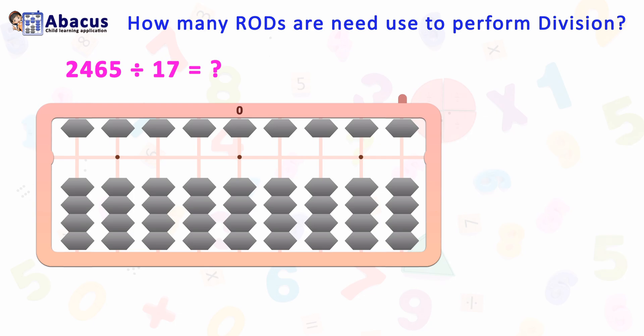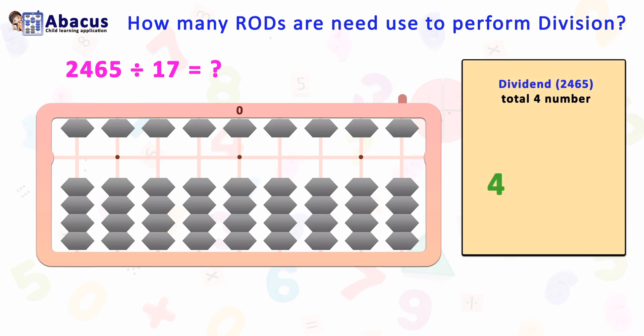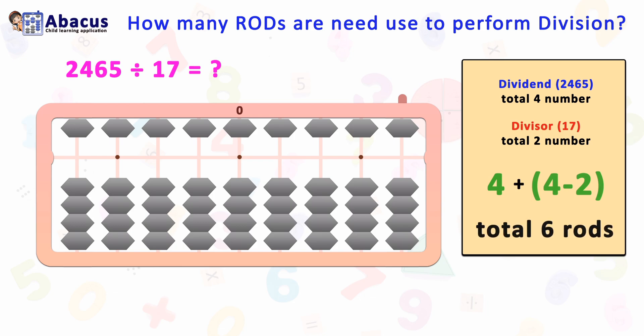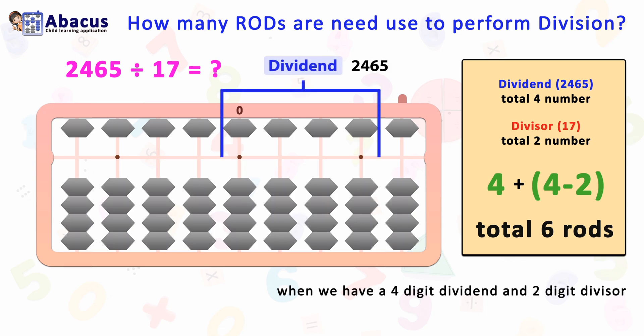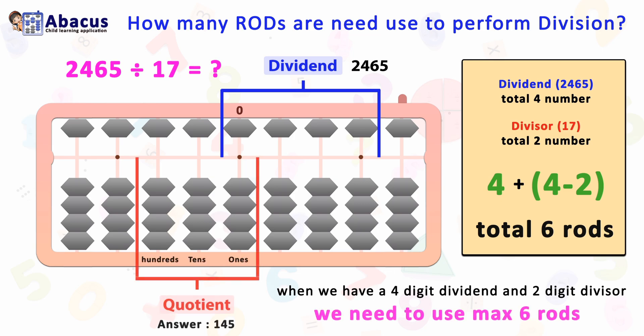Another example: 2465 divided by 17. Here the same rule is applied. The dividend has four digits and the divisor has two digits. As per the trick, 4 plus 4 minus 2 equals 6. So here we need to use a maximum of six rods to perform this division, when we have a four-digit dividend and two-digit divisor.